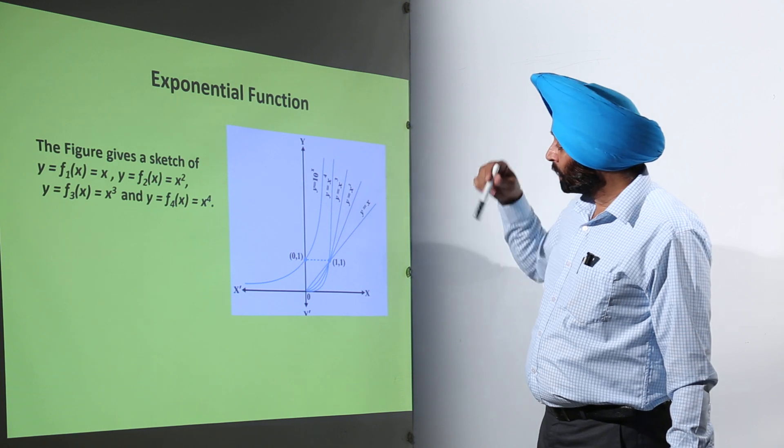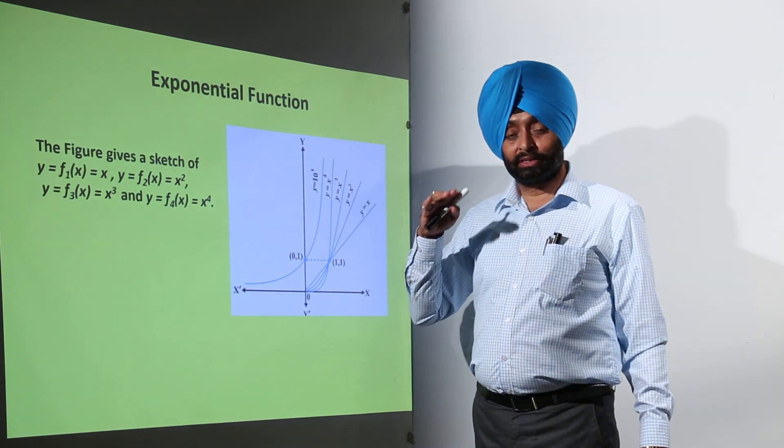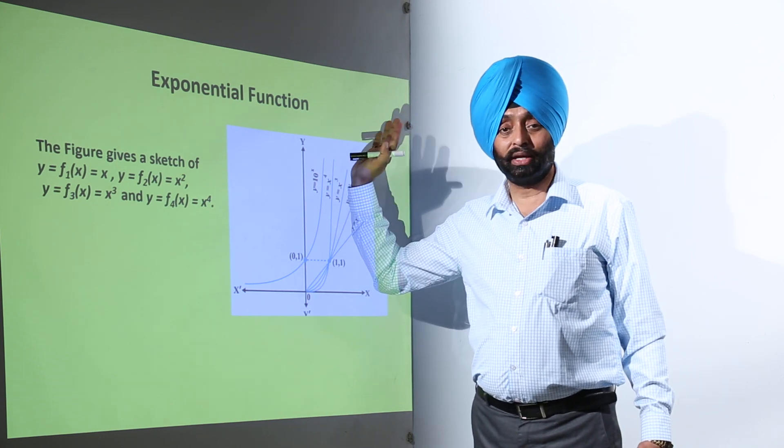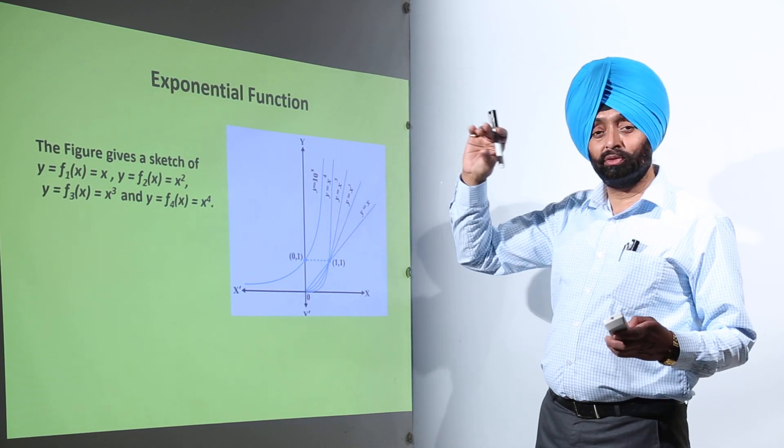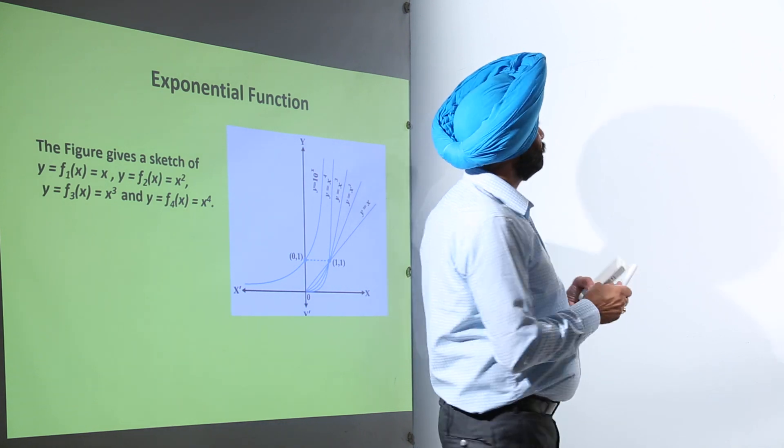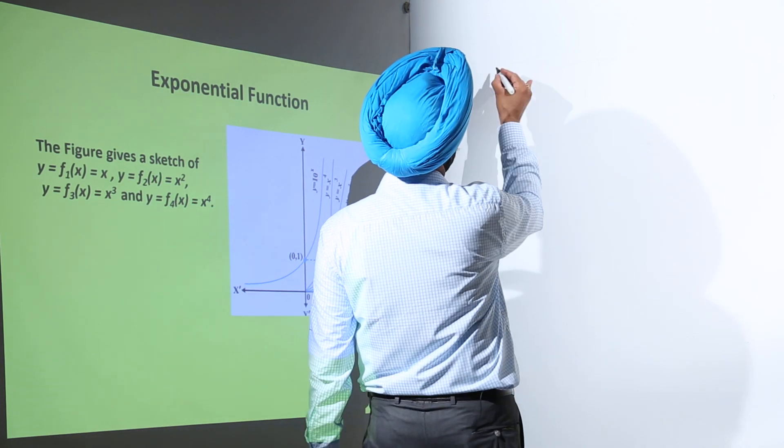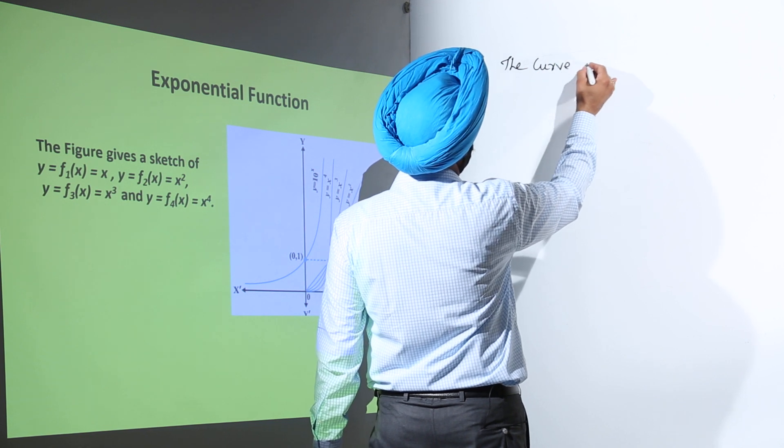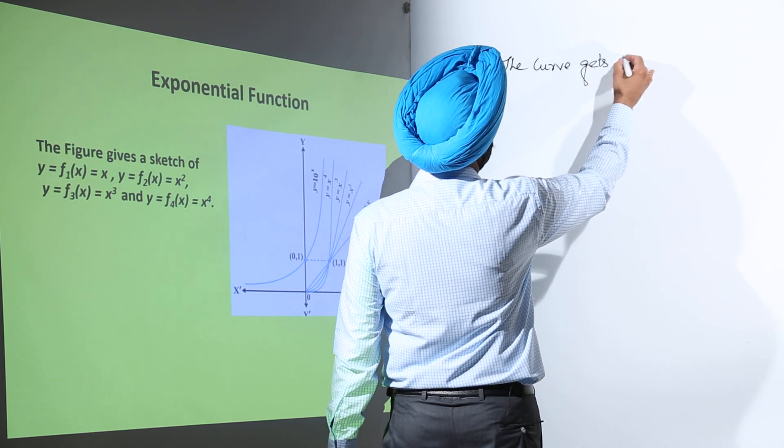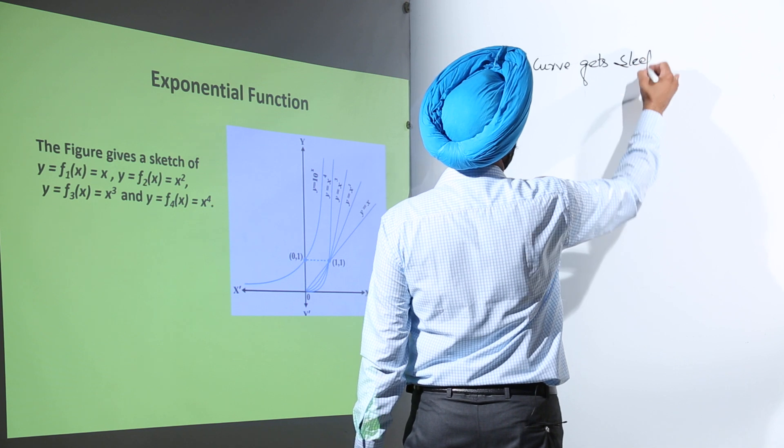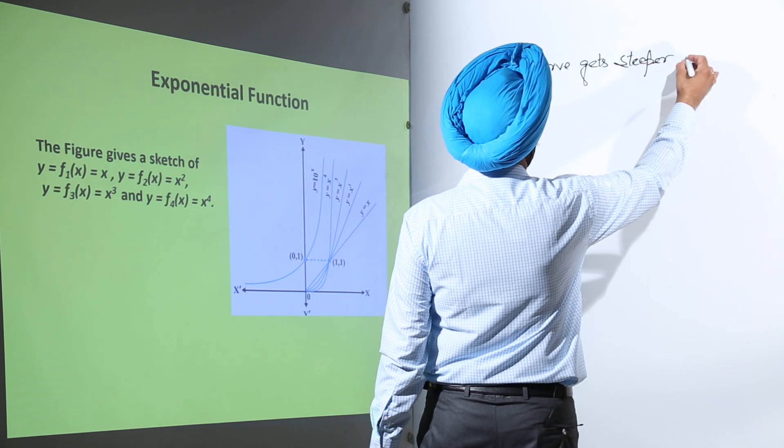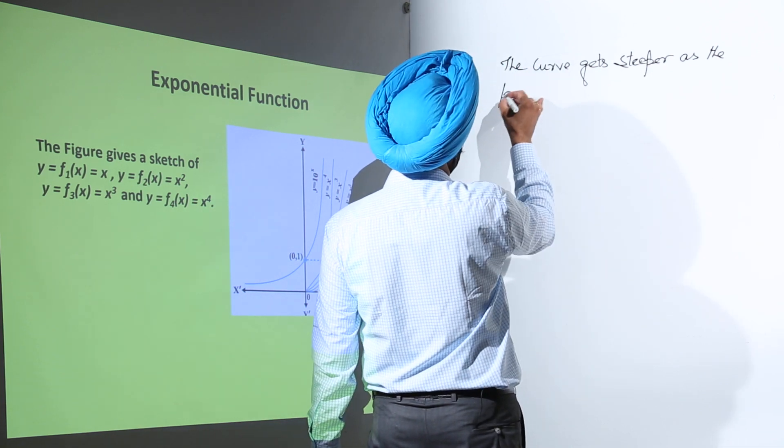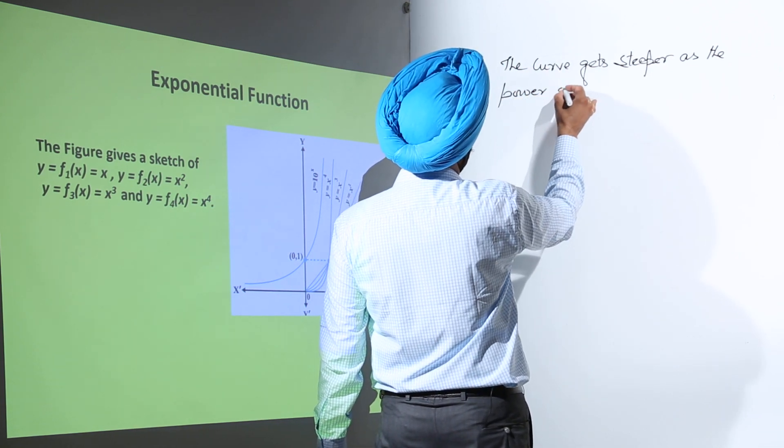Now what you are observing? As the power of x increases, the graph is moving towards the y-axis. So let me give you something in return. Now, the curve gets steeper as the power of x increases.